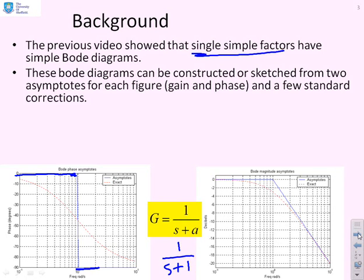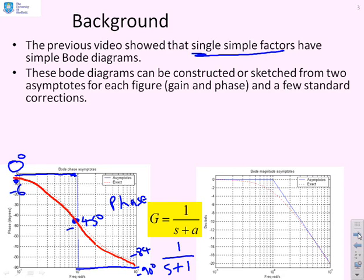Now this is the phase plot. We had 0 degrees for low frequency, minus 90 degrees for high frequency. We said there was a value of minus 45 degrees at the corner frequency. And then in particular we also said you could put values like minus 6 if you were a decade away, and minus 84 a decade that way. And hence you'll see the actual Bode diagram given here.